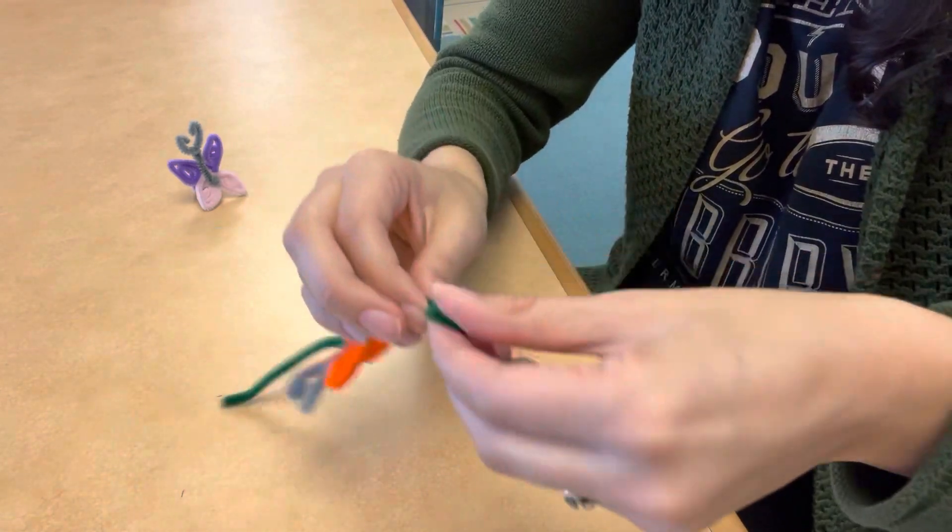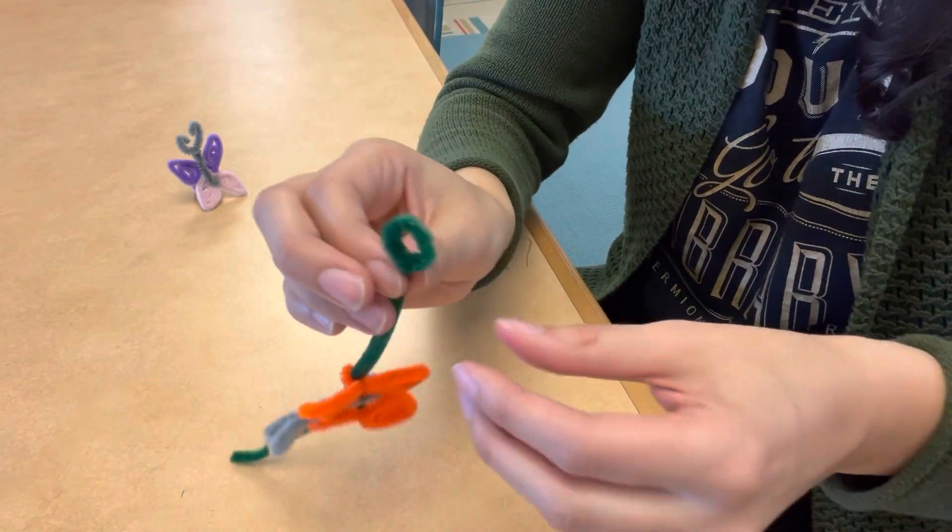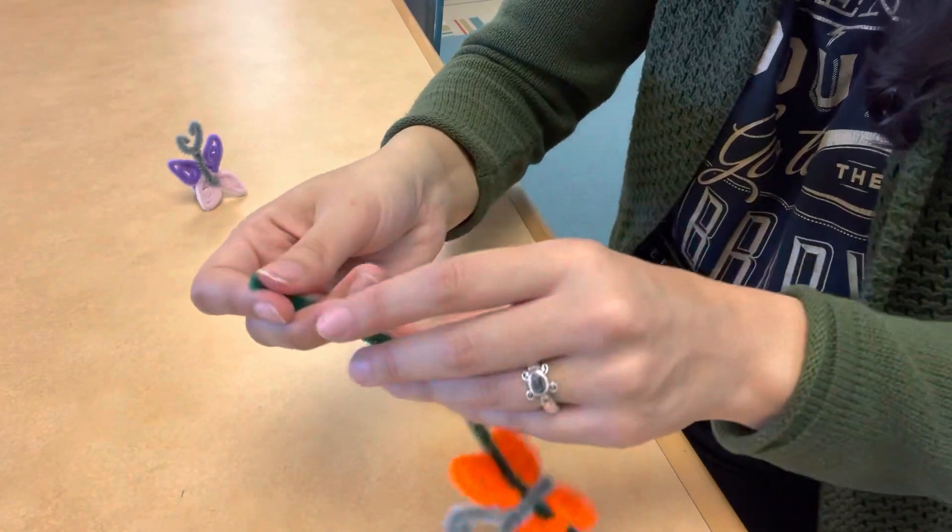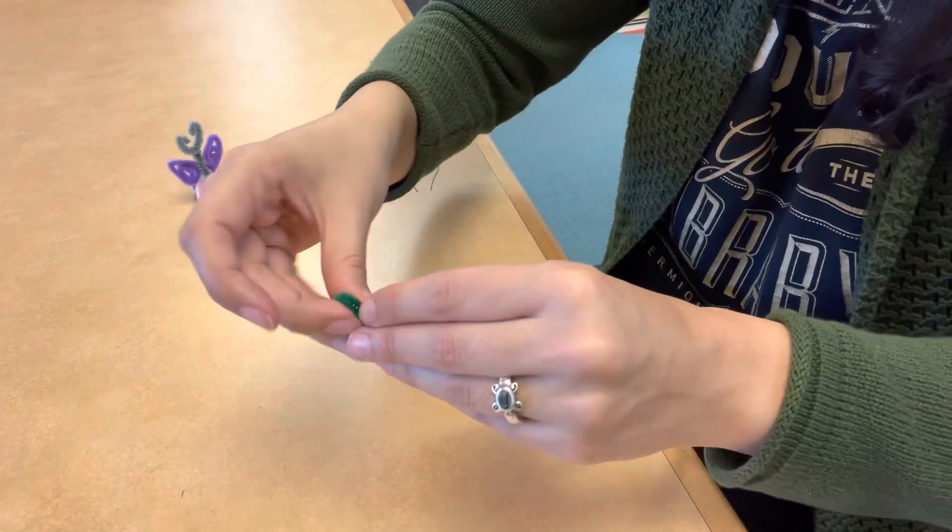And you have your bracelet. When you put it on, you just put one loop inside the other and fold it over.